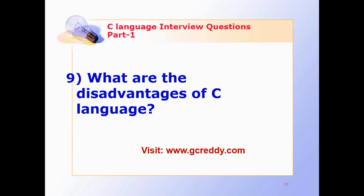What are the disadvantages of C language? There is no runtime checking. There is no strict type checking. For example, we can pass an integer value for the floating data type. As the program extends, it is very difficult to fix the bugs.